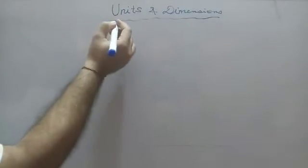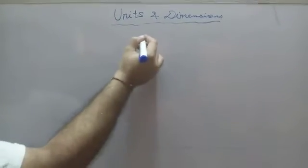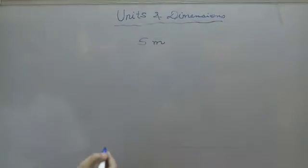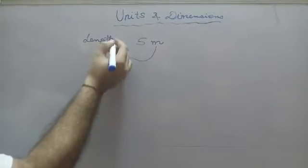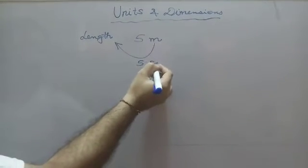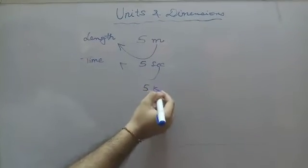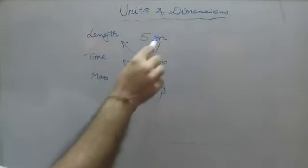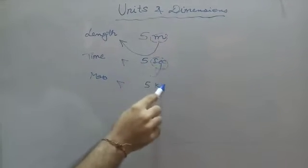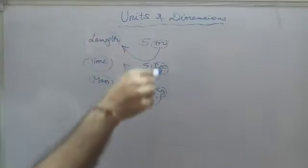To understand units, let's take an example: five meter — here 'meter' gives us an idea about length; five second — 'second' gives us an idea about time; and five kg — 'kg' gives us an idea about mass. So we can say that this 'something' which gives us an idea about the physical quantity is called a unit.